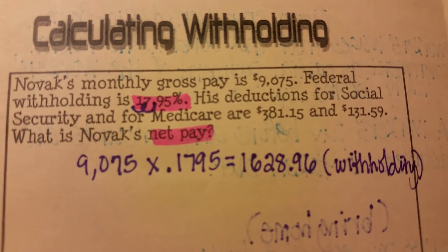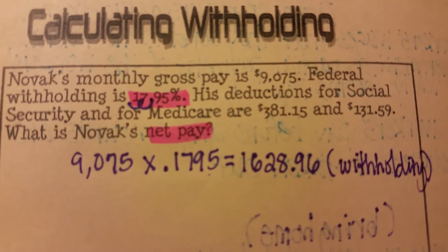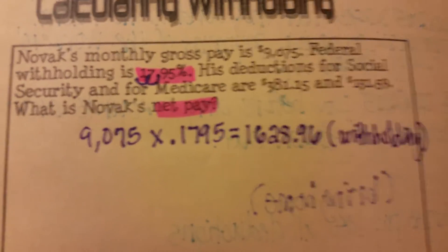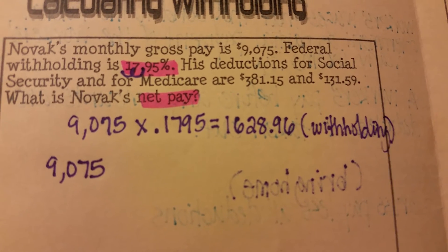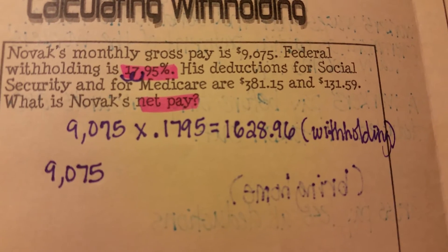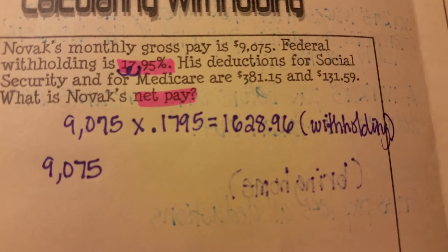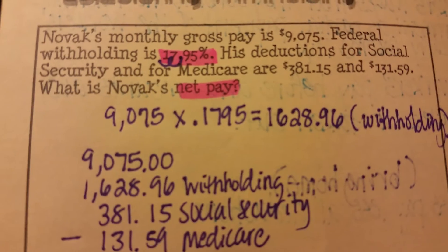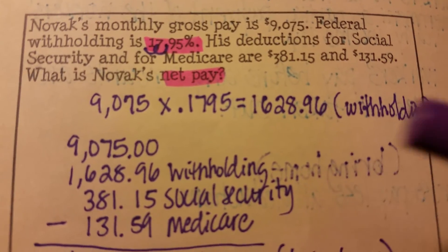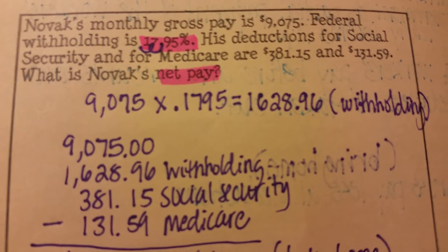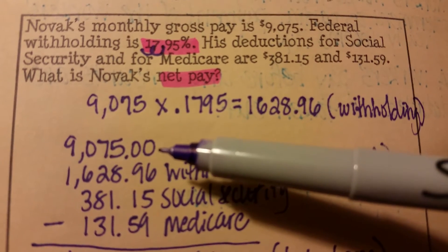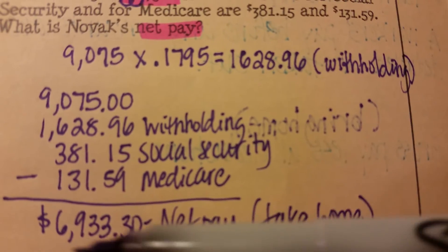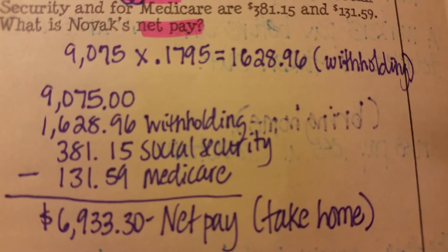He has more deductions for Social Security and Medicare, which are also going to be taken out of his check. We take the $9,075 and subtract the withholding, Social Security, and Medicare. What you and your partner should have gotten was $6,933.30 — that's his net pay, what he's going to take home.